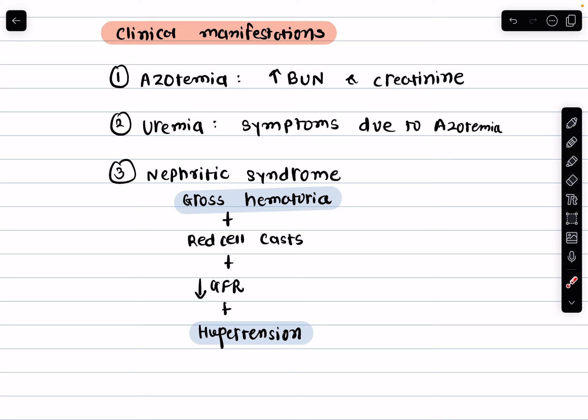The second clinical manifestation is uremia. Uremia refers to symptoms caused by azotemia — azotemia is an asymptomatic condition diagnosed by laboratory tests, while uremia is the sign and symptom complex. When waste products accumulate in the blood they can cause nausea, fatigue, and other systemic effects.